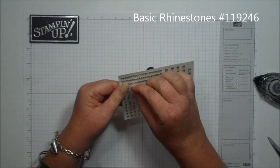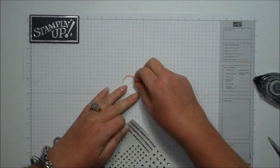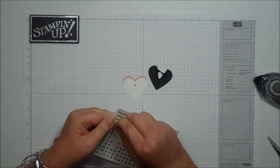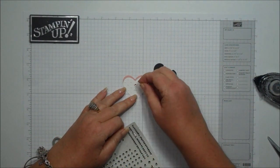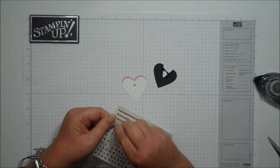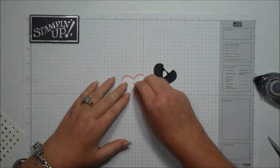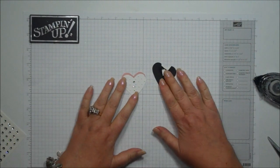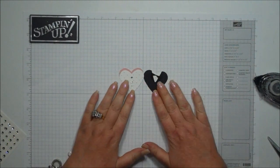So then for the bride, I'm going to add some basic rhinestones. I'm going to take the small ones, just put like three of them going down the center of the heart. So there you go. There's the bride and the groom.